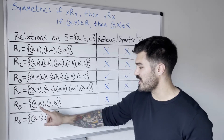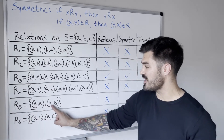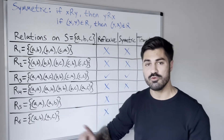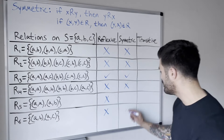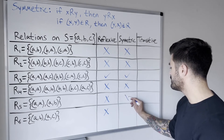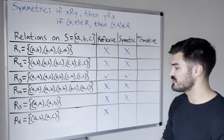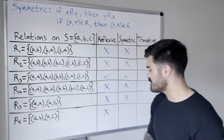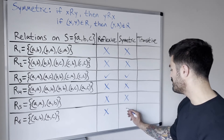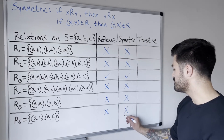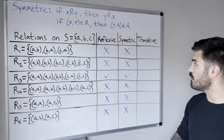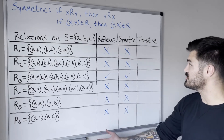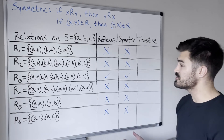Relation five: we have (A,B) but not (B,A) — not symmetric. Relation six: similarly has (A,B) but not (B,A) — not symmetric. So only one of our six relations was symmetric.